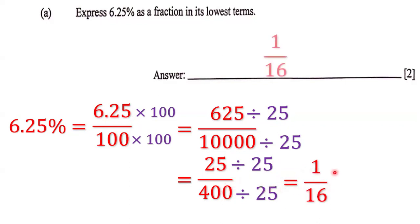So our answer here is 1 over 16 because we cannot simplify this fraction further. This fraction is in lowest terms. That means 6.25% written as a fraction in lowest terms is 1 over 16.